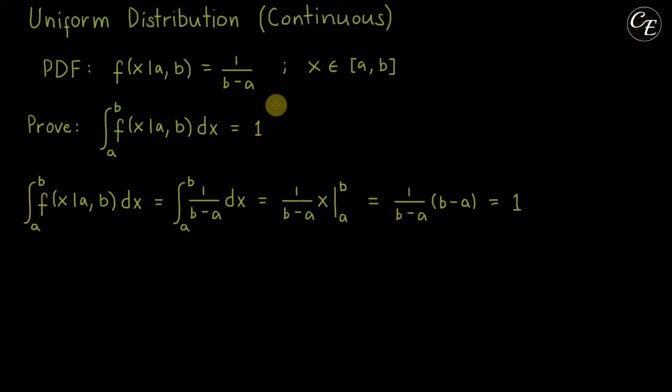Now, to introduce this continuous uniform distribution, we have here a continuous probability distribution case with a probability density function or PDF shown here, 1 over b minus a. Its domain x is defined at closed interval a and b.